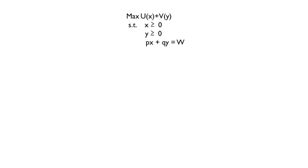Now we're going to put everything that we have learned together to look at an optimization problem that combines all of the elements that we have seen and is a very important canonical maximization problem in economics. This involves maximizing over two variables, x and y, both of which cannot be negative, and are subject to an equality constraint of the form Px plus Qy equals W, where P, Q, W are greater than zero.